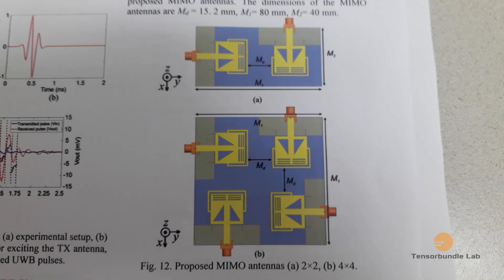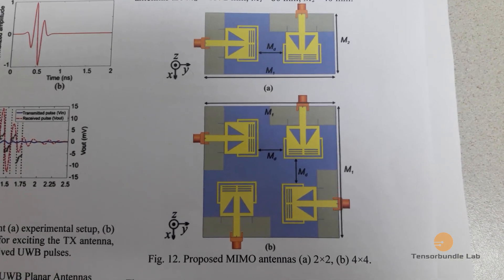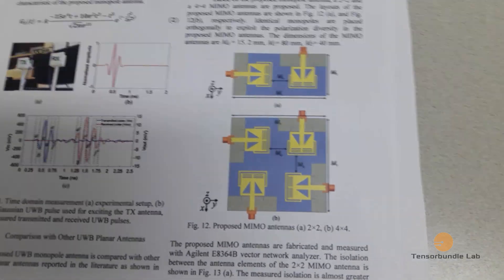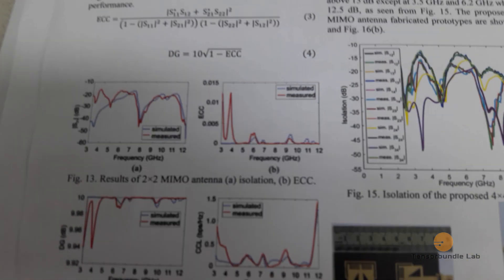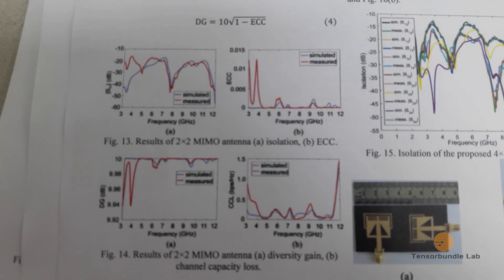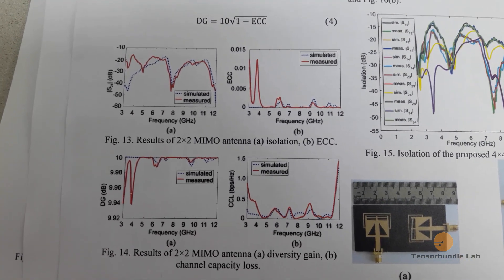So we developed this MIMO antenna arrays, 2 by 2 and 4 by 4, and we calculated the isolation, ECC plots, and diversity gain, and the channel capacity loss.